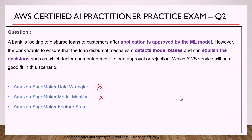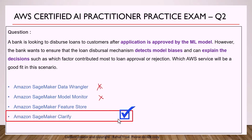Amazon SageMaker Feature Store is used for storing features exported from Data Wrangler, which different teams can use to train models or for inferencing. It cannot detect model bias or explain decisions. Finally, Amazon SageMaker Clarify is the correct answer. SageMaker Clarify does three key things: it detects model bias, it can evaluate large language models, and it can explain model decisions by highlighting which features were most important in leading to a particular decision.